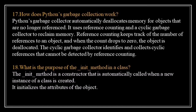How does Python's garbage collection work? Python's garbage collector automatically deallocates memory for objects that are no longer referenced. It uses reference counting and a cyclic garbage collector to reclaim memory. Reference counting keeps track of the number of references to an object — when the count drops to 0, the object is deallocated. The cyclic garbage collector identifies and collects cyclic references that cannot be detected by reference counting alone.